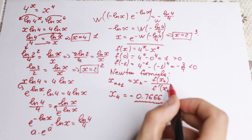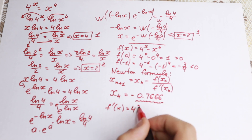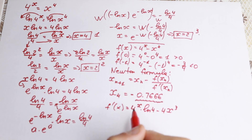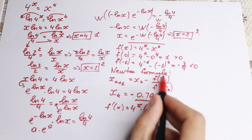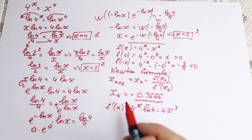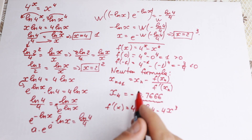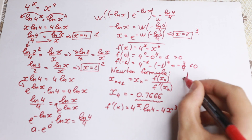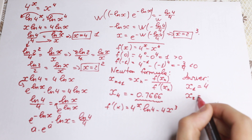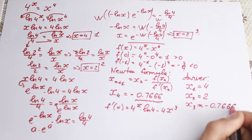The derivative is f′(x) = 4^x · ln(4) − 4x³. Plugging into Newton's formula iteratively, I calculated this root and found x₃ ≈ −0.7666... So using Newton's method I found the third solution. Our final answers are: x₁ = 4, x₂ = 2, and x₃ ≈ −0.7666.